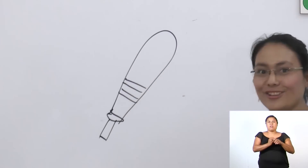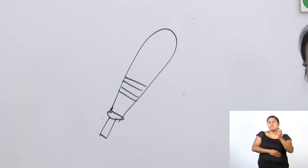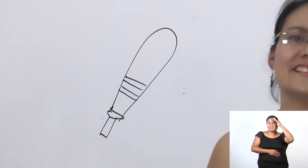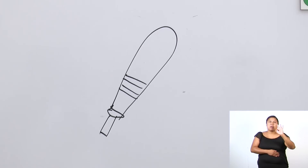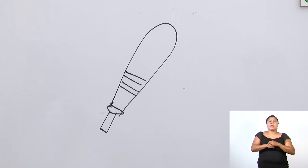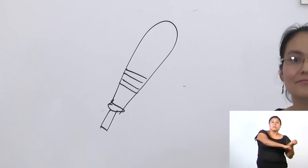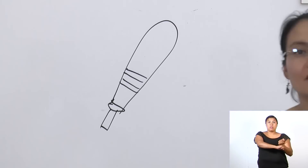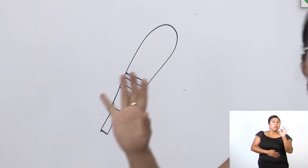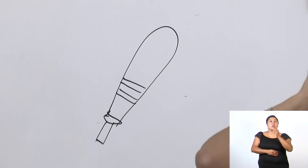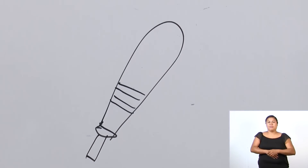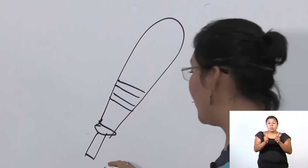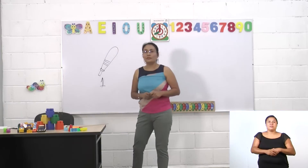¿Qué será esto? Echa a volar tu imaginación. Puede ser un palo para la piñata, puede ser un palo de béisbol, un bat, o simplemente un leño que hayas cortado. Esto forma una colección de un elemento: número uno.